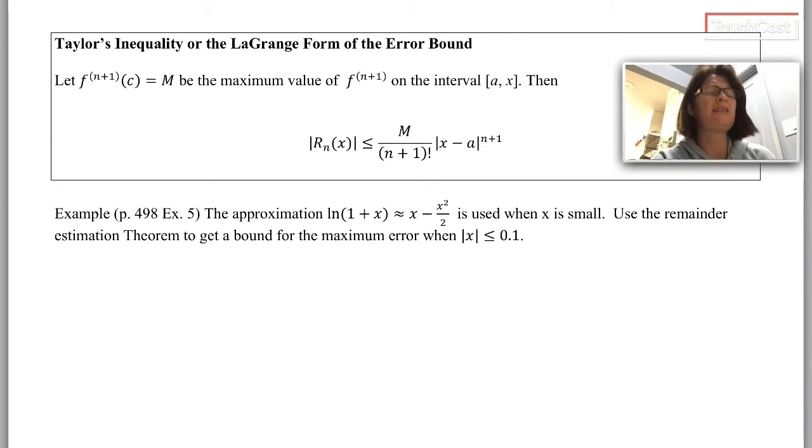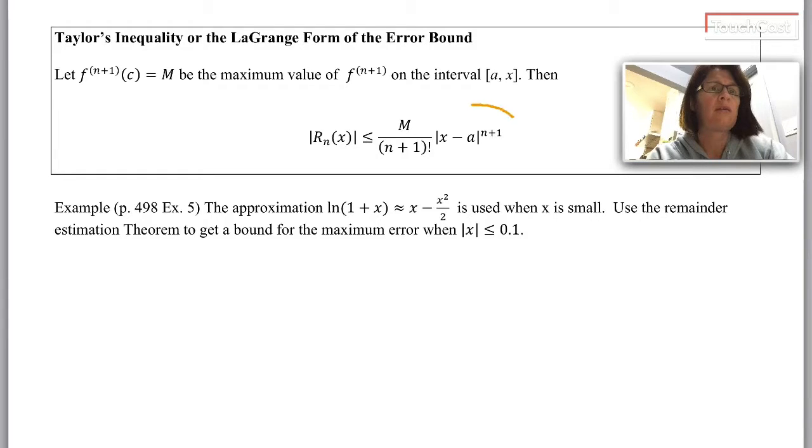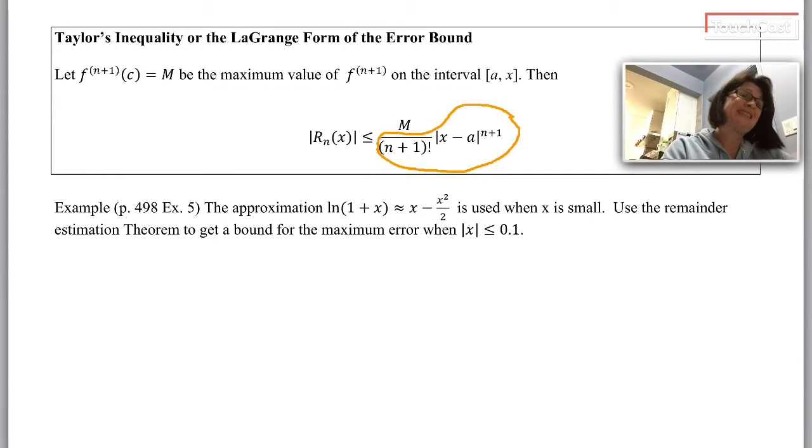Notice that this theorem doesn't help us necessarily know the sign of the error, but we can know the absolute value of the error. The absolute value of the difference between the actual value of the function and our approximation is less than - look at this - this part looks exactly like the n+1th term of the Taylor polynomial, and M is some number you know is the maximum value of your n+1th derivative on the interval.